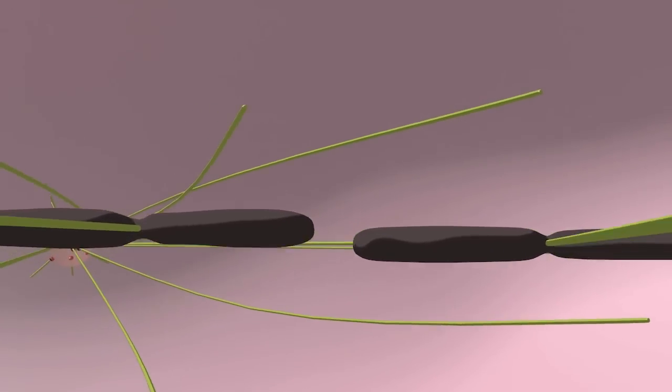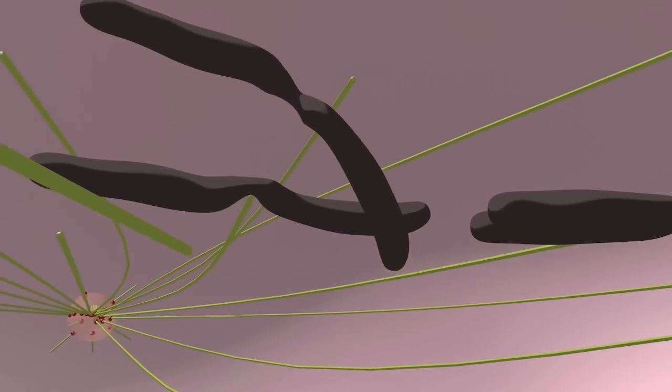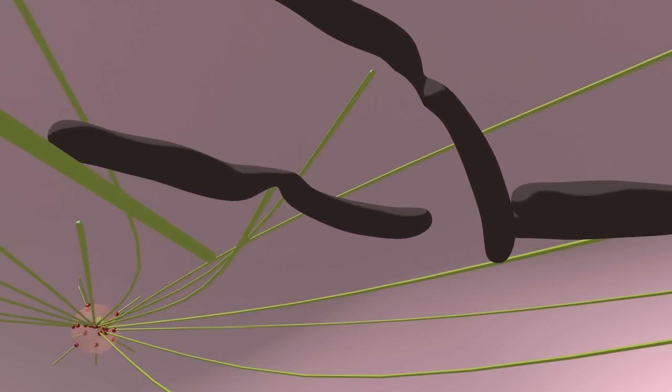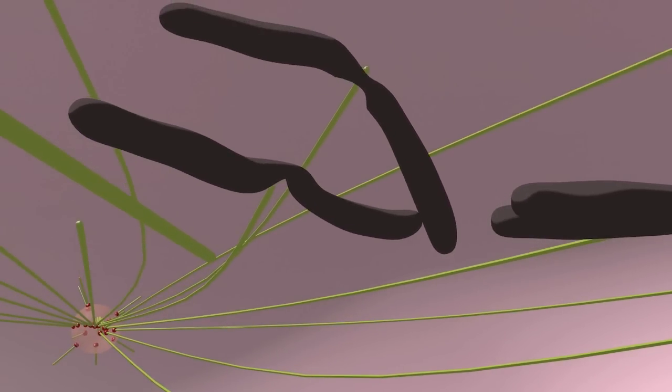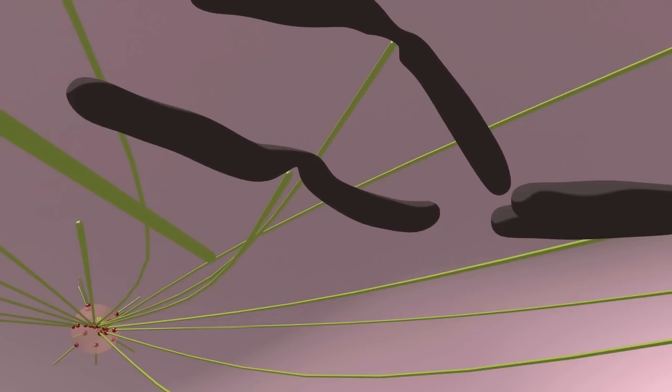If sister chromatids separate prematurely, they will attach to microtubules at random, increasing the likelihood that they will segregate to the same spindle pole and consequently to the same daughter cell.